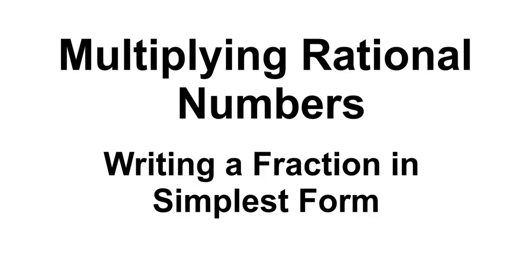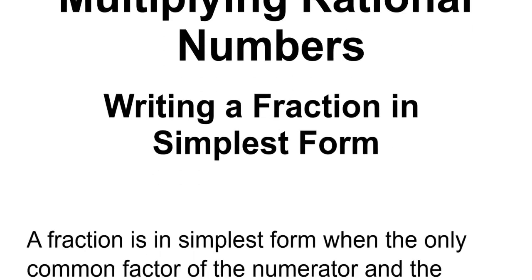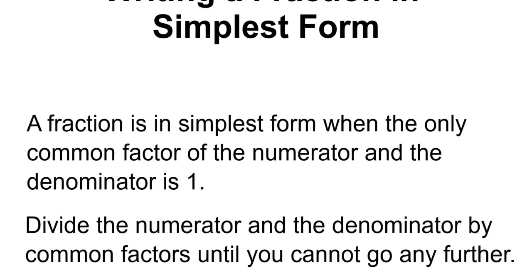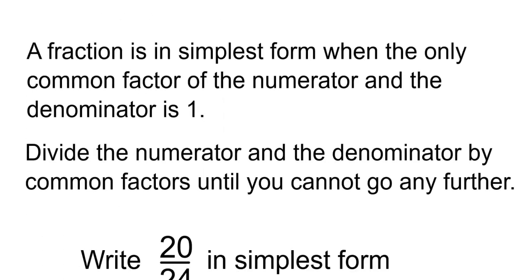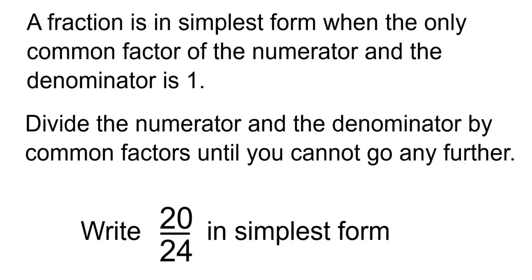Multiplying Rational Numbers: Writing a Fraction in Simplest Form. A fraction is in simplest form when the only common factor of the numerator and the denominator is 1. Divide the numerator and the denominator by common factors until you cannot go any further.